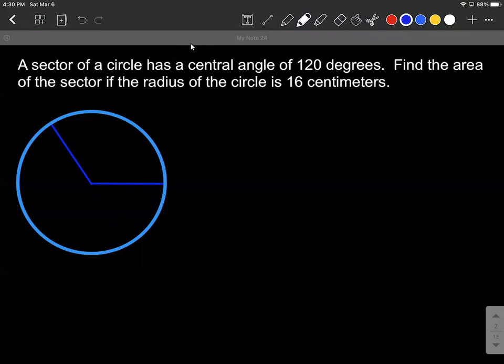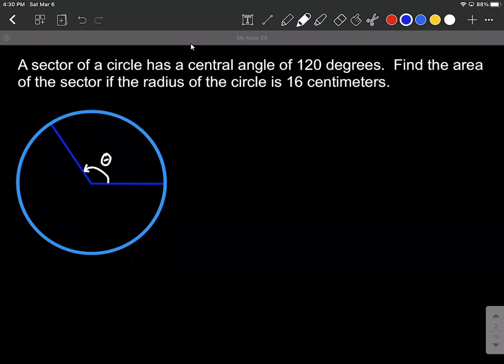So just kind of labeling things along the way here on our diagram, this angle going across here we'll call it theta. We're given that that is 120 degrees, and then the radius of this circle is 16 centimeters.